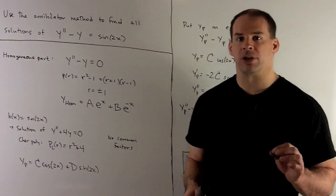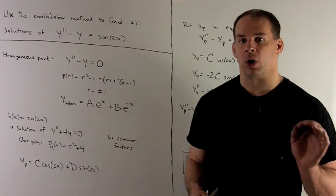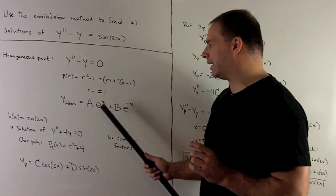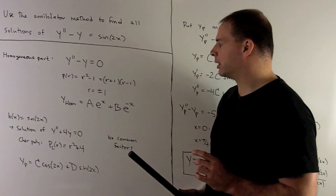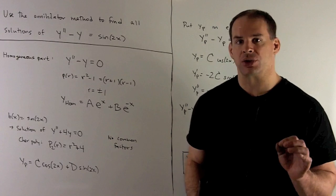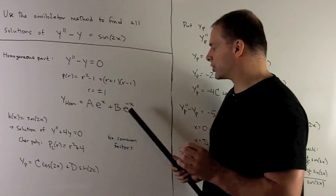Characteristic polynomial here is going to be r squared minus one, so the roots are r equal to plus minus one, and our homogeneous part is going to be A e to the x plus B e to the minus x. So, once I have a particular solution, we'll get all solutions by adding that to this term here.